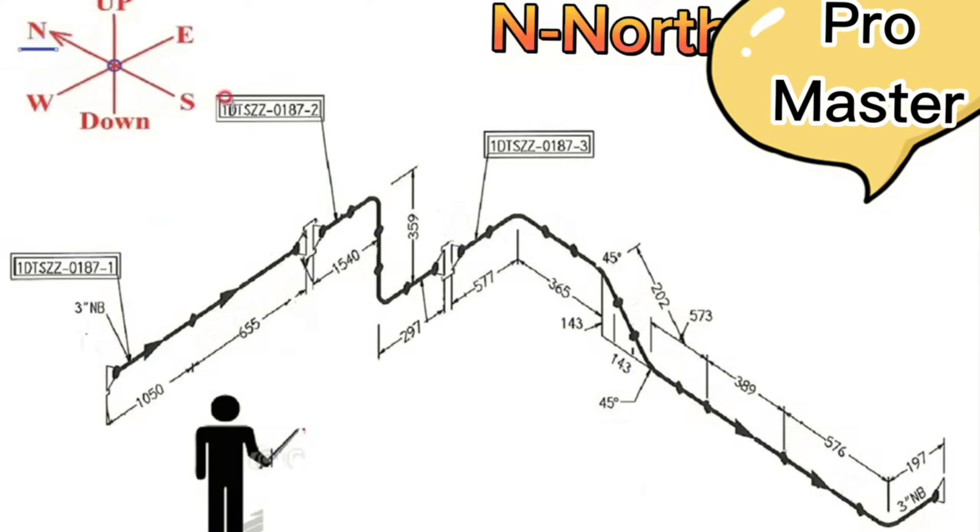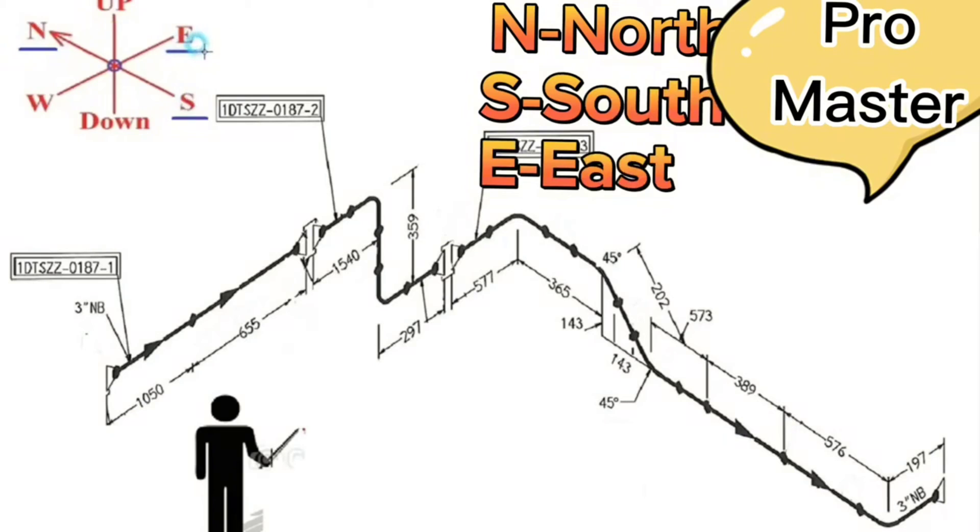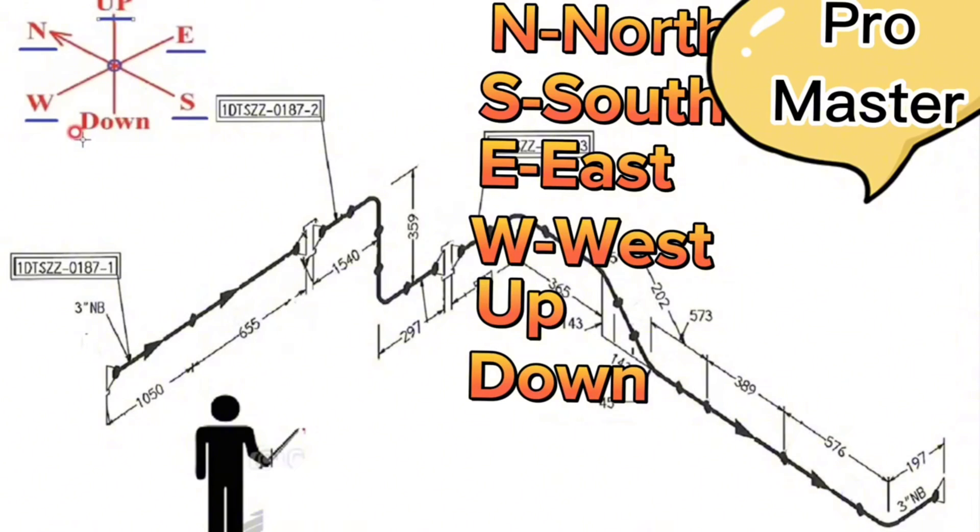N means north. S means south. E means east. W means west. Up means up. Down means down directions.